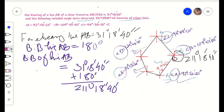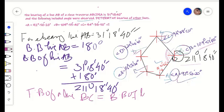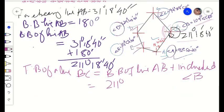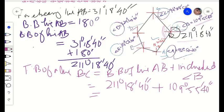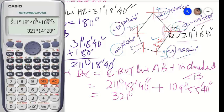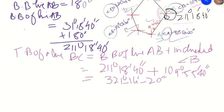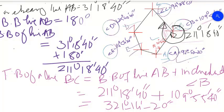In order to find out the forebearing of line BC, we will add the included angle B — that is 109 degrees 55 minutes and 40 seconds — to the back bearing of line AB. The forebearing of line BC equals the back bearing of AB (211°18'40") plus included angle B (109°55'40"), giving us 321 degrees 14 minutes and 20 seconds.